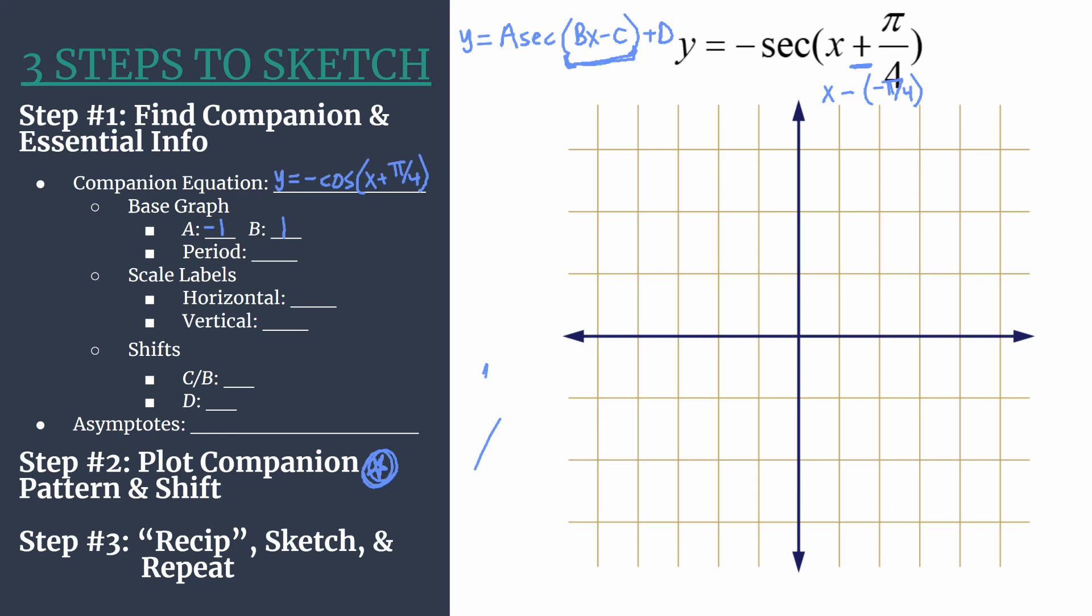And we also use b to find the period or the length of one horizontal cycle. And we calculate that with 2 pi divided by b. So our period is 2 pi here.